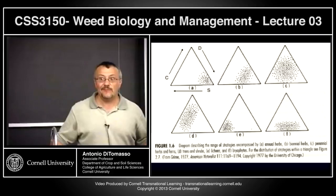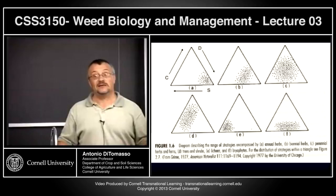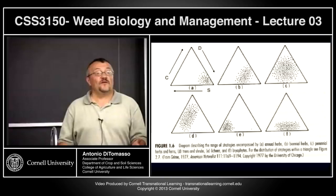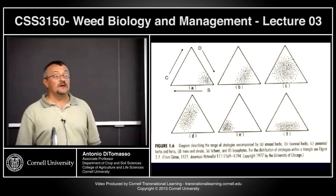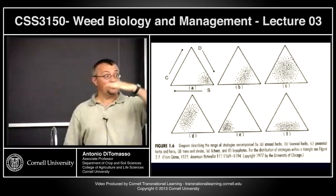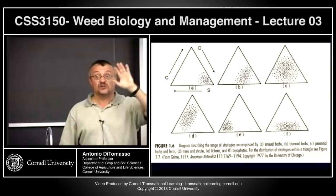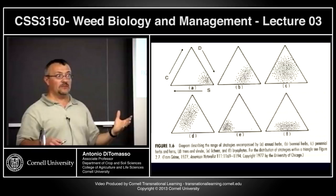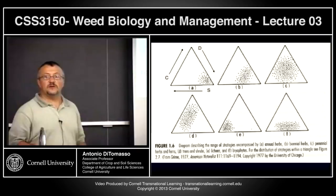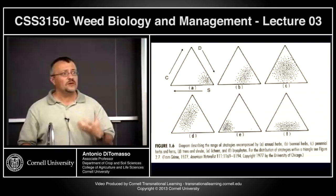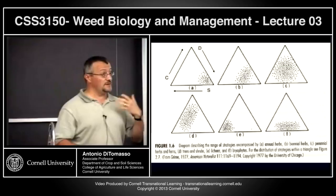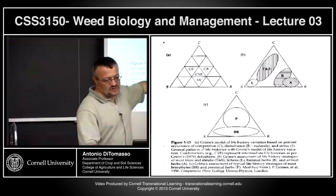Lichen's niche is that they can handle conditions nothing else can — they're in it for the long run, not producing much, just surviving. Throw them in an old field and they'll be competed out. The concern now is what happens with climate change — we're seeing a northward migration of species typical of temperate areas, same for birds and insects. You can group organisms, but you can't always be specific about exactly where a single species falls. Ragweed, for example, tends to be a ruderal, high-disturbance-adapted species, but also very competitive — the more fertility, the bigger those plants grow.